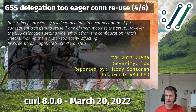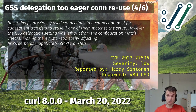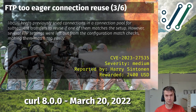Similar to that, number four is the GSS delegation too-eager connection reuse — it too eagerly reuses connections even though the GSS delegation option has been changed. Another Harry find. All five of Harry's findings are over 4,000 days old; the telnet one is over 8,000 days old — really ancient things. The FTP eager connection reuse is the only medium severity; the others are low severity.